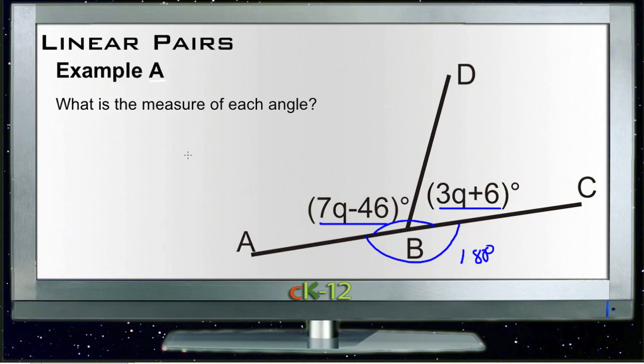That tells us that we could write 7q minus 46 plus 3q plus 6 equals 180 degrees, because those two angles together have to total 180 degrees. Now we just combine like terms.